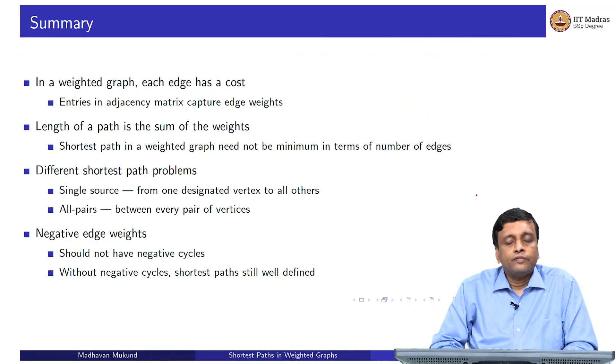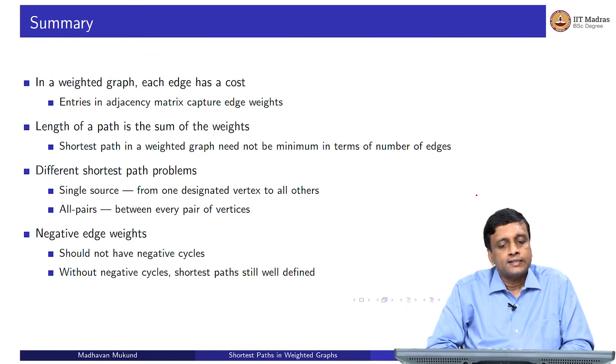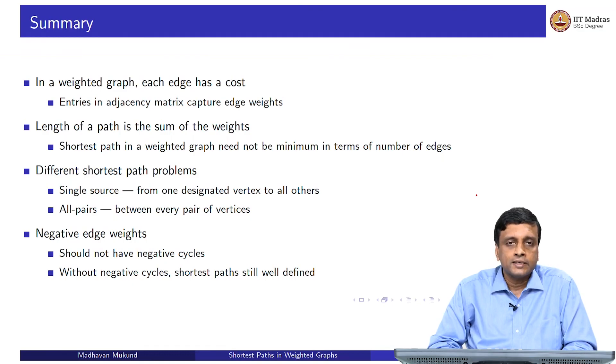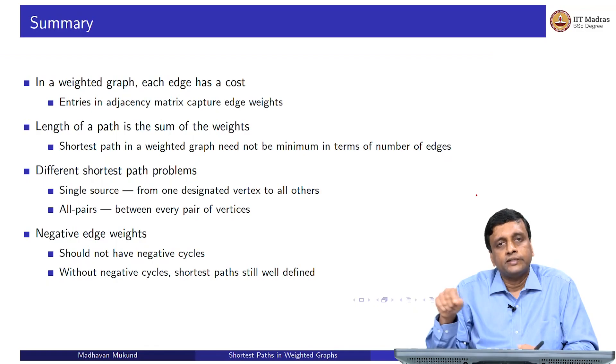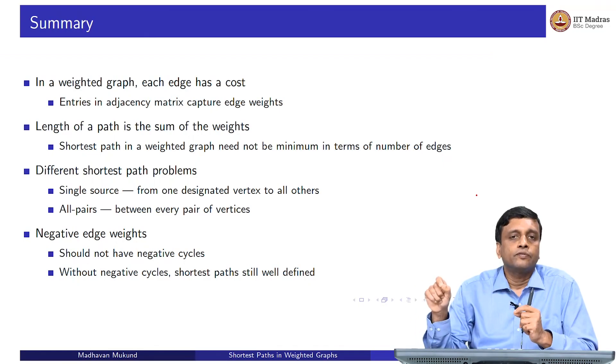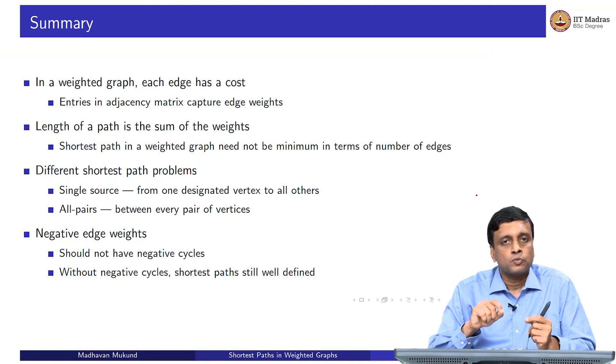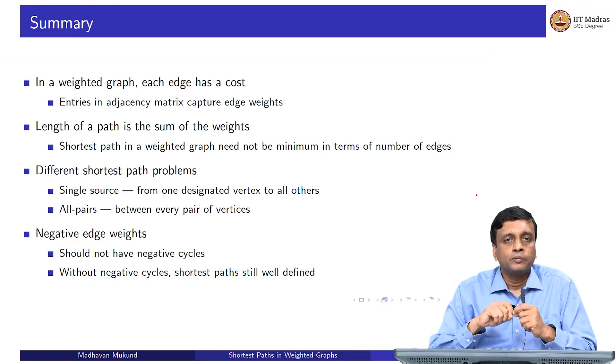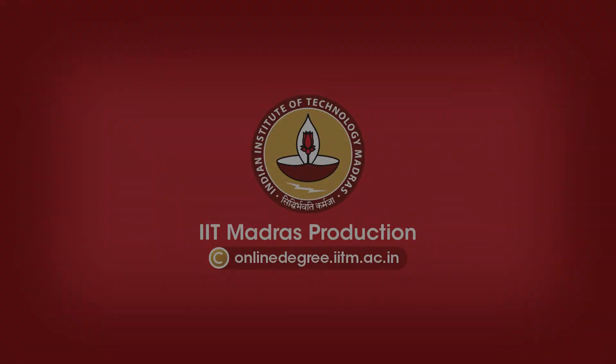To summarize, in a weighted graph, each edge has a cost. We can now represent this in an adjacency matrix or an adjacency list by explicitly representing the cost of every edge. When we follow a path in such a weighted graph, we add up the cost. The length of a path is not the number of edges as we were doing for BFS, but it is the sum of the weights along these edges. We want to solve the shortest path problem with respect to this notion of path length, which is the cost added up across the different edges. There are two different problems that we will look at: the single source problem, where I want to find the shortest path from a fixed vertex to every other vertex, and the all pairs shortest path problem, which asks me to find the shortest path from any vertex to any other vertex.